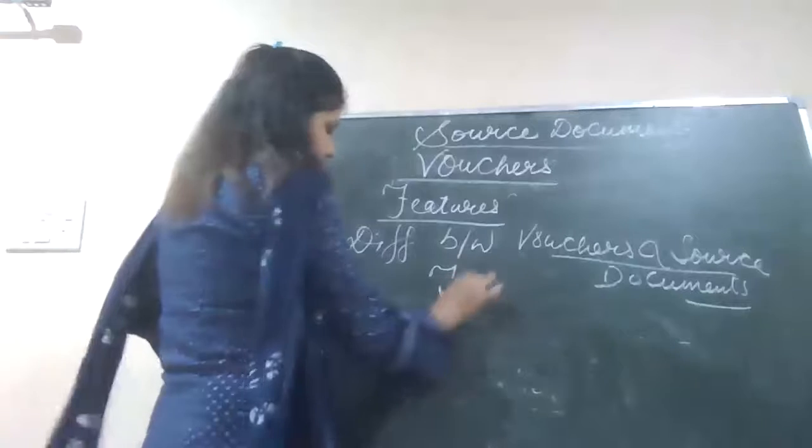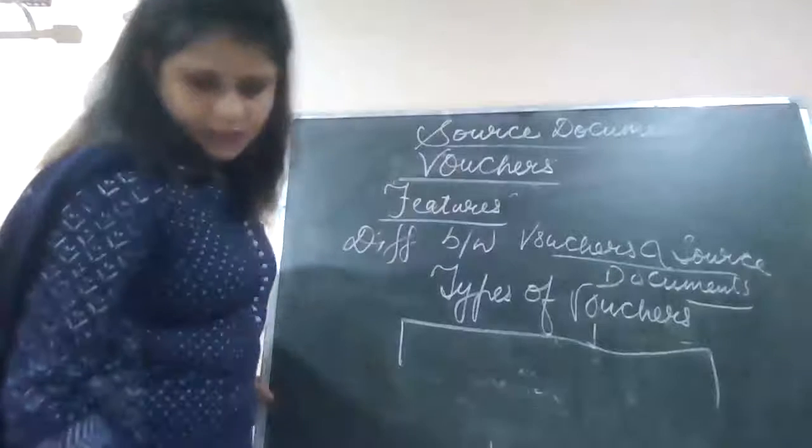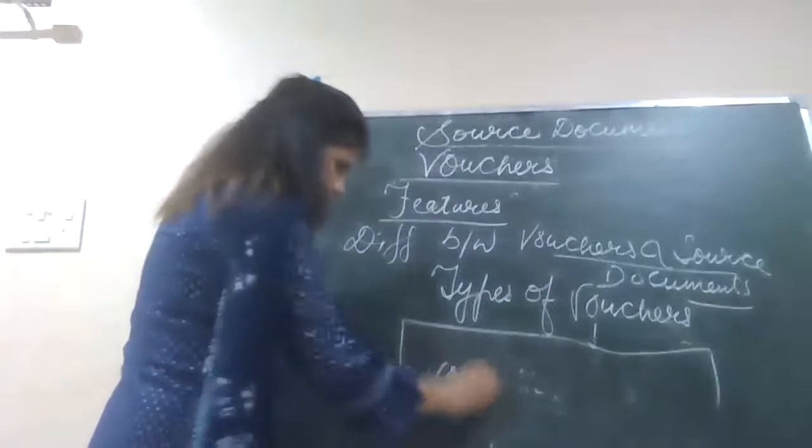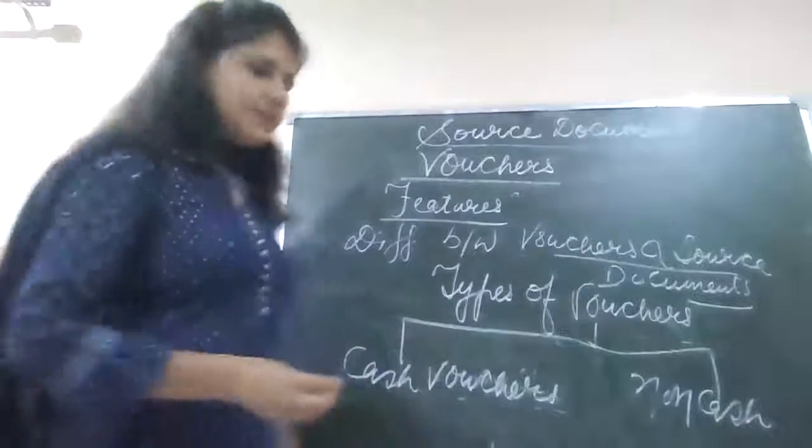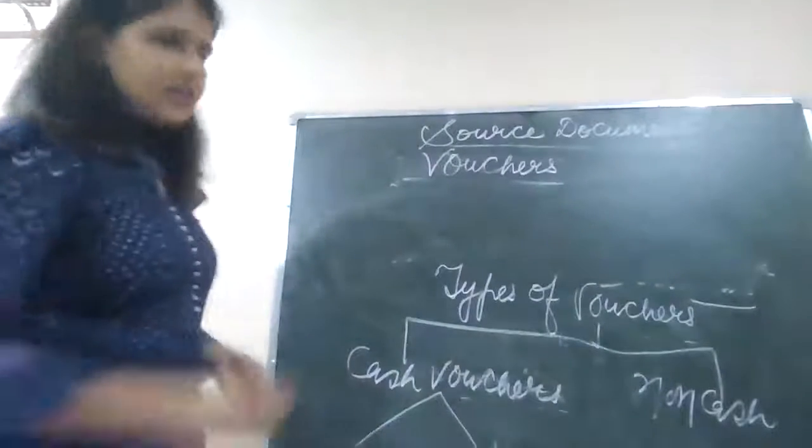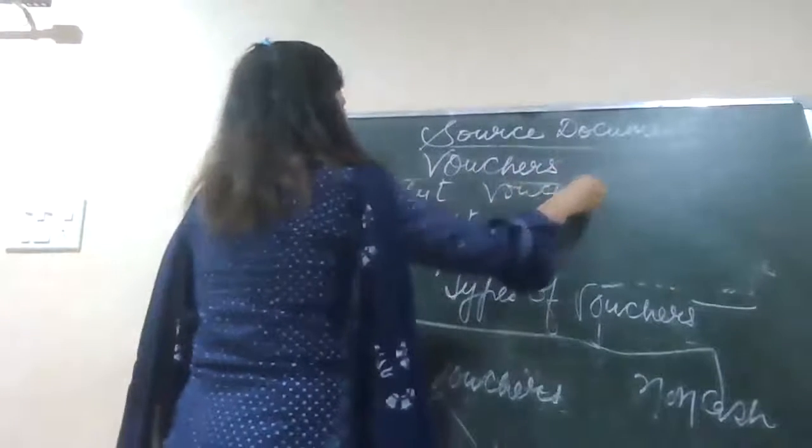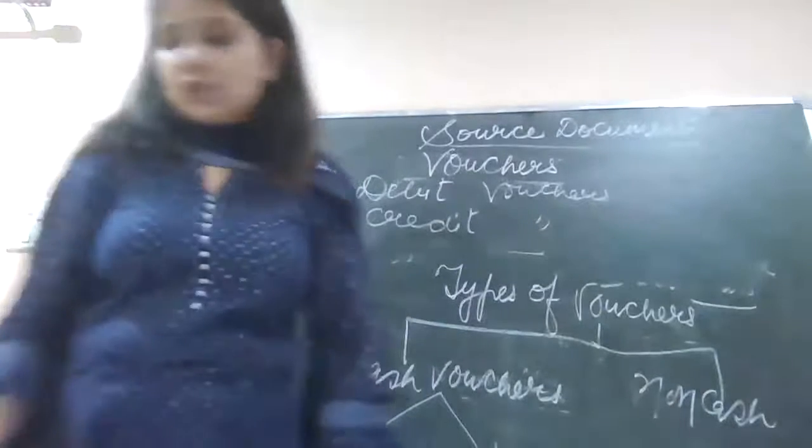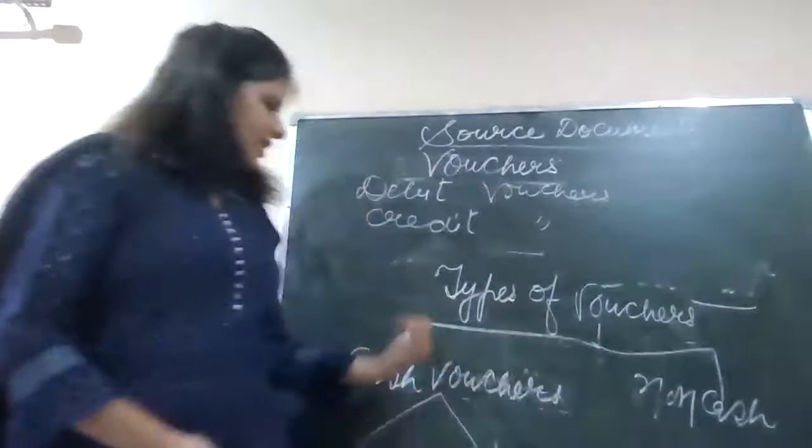Types of vouchers: we have two main categories. Cash vouchers and non-cash vouchers. Cash vouchers have two types: debit voucher and credit voucher. For all expenses we will make debit voucher. For all incomes we will make credit voucher. Non-cash transactions have no sub-category. Non-cash vouchers are also called transfer vouchers.